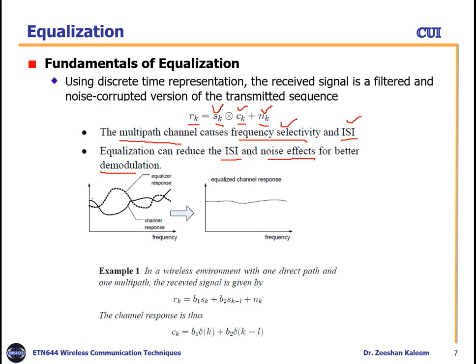Let's see how the equalizer works. The solid line represents the original multipath channel response. To overcome its effect, we generate the opposite response — the dotted line — which is the equalizer response. When these two are combined, they cancel each other out, leaving a straight line. This means the channel response is overcome and the channel is equalized, so the data will not be corrupted.